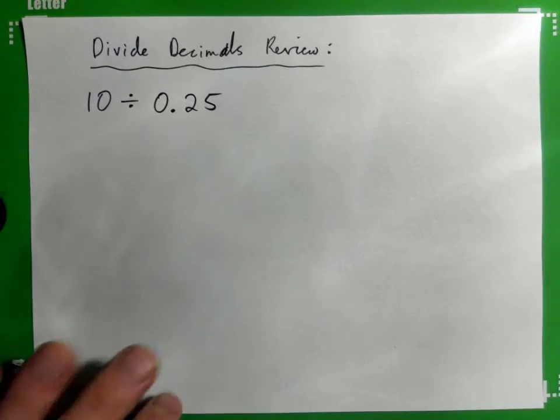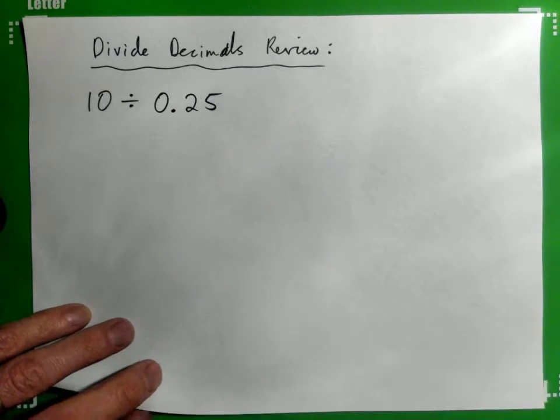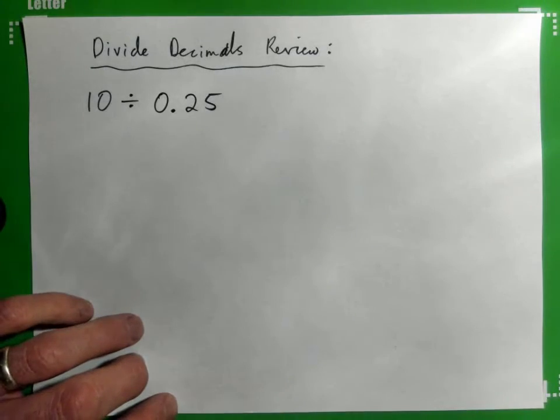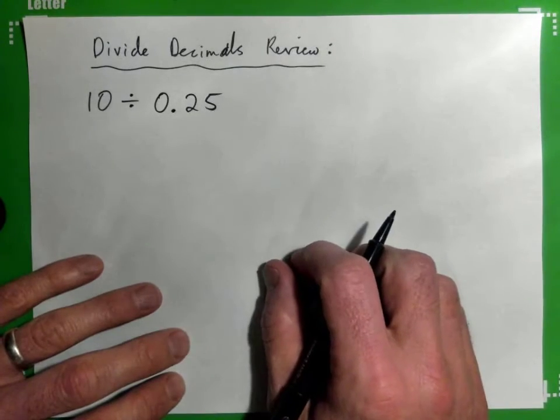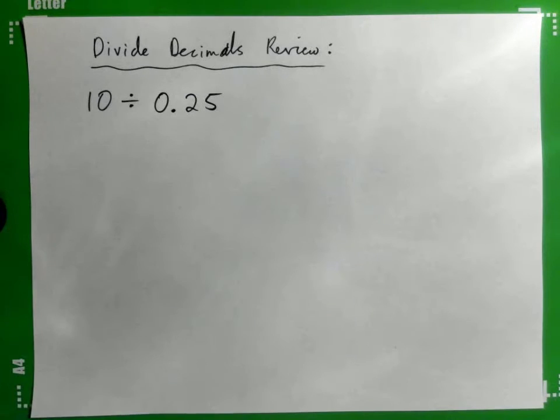So it's 10 divided by 0.25. We're doing a divide decimals review here. What this means is $10 divided by 0.25.